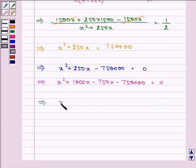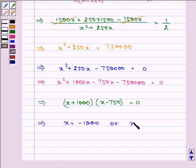So we have x plus 1000 as one of the factors and x minus 750 as one of the factors. This implies the value of x is minus 1000 or equal to 750.